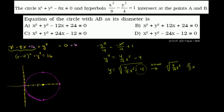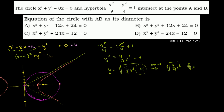So as x approaches infinity, y approaches 2 thirds x. The asymptote has slope 2 thirds — if you run 3, you rise 2 — and by symmetry there's also an asymptote going the other way. Setting y equal to 0 to find x-intercepts gives x squared over 9 equals 1, so x equals plus or minus 3. Our hyperbola on the right side looks something like that; the left side is less interesting since it doesn't interact with the circle.